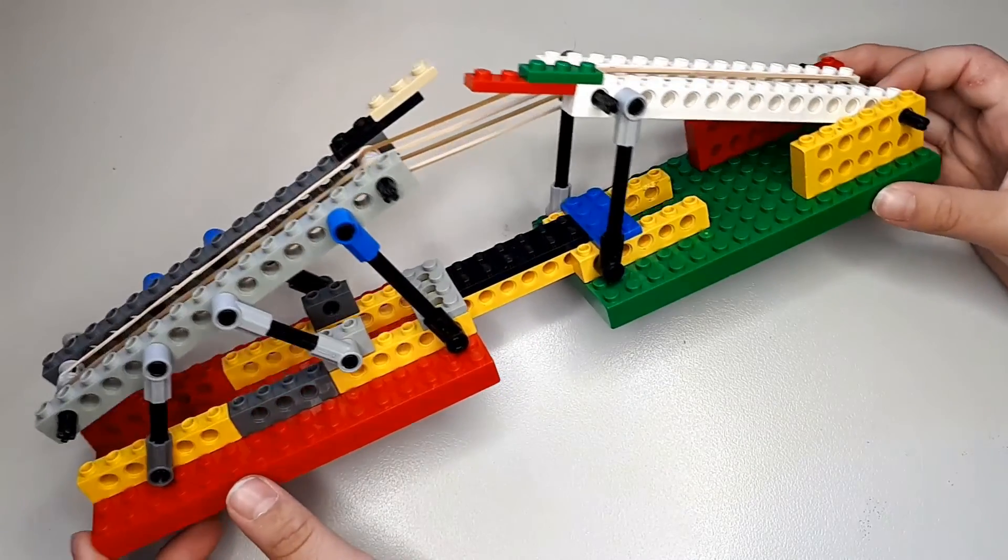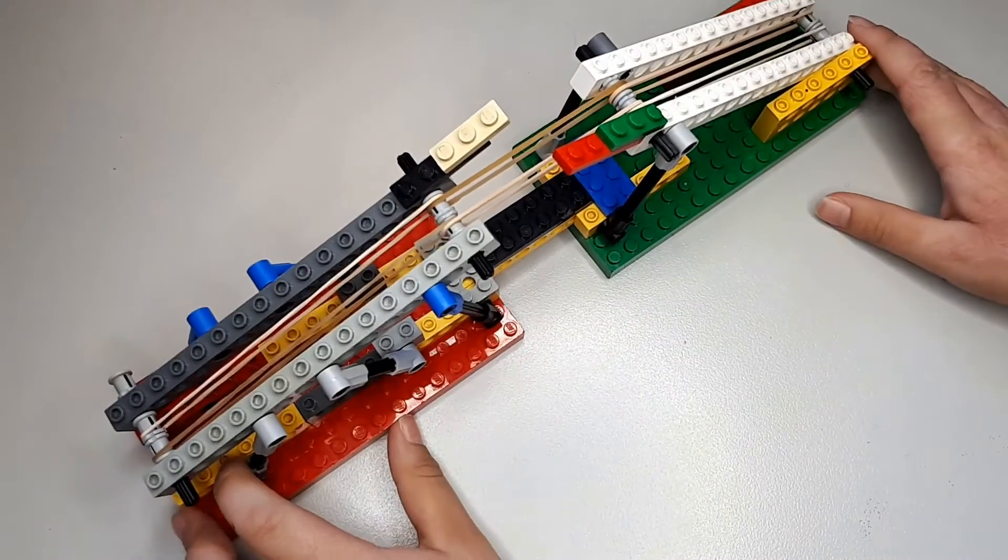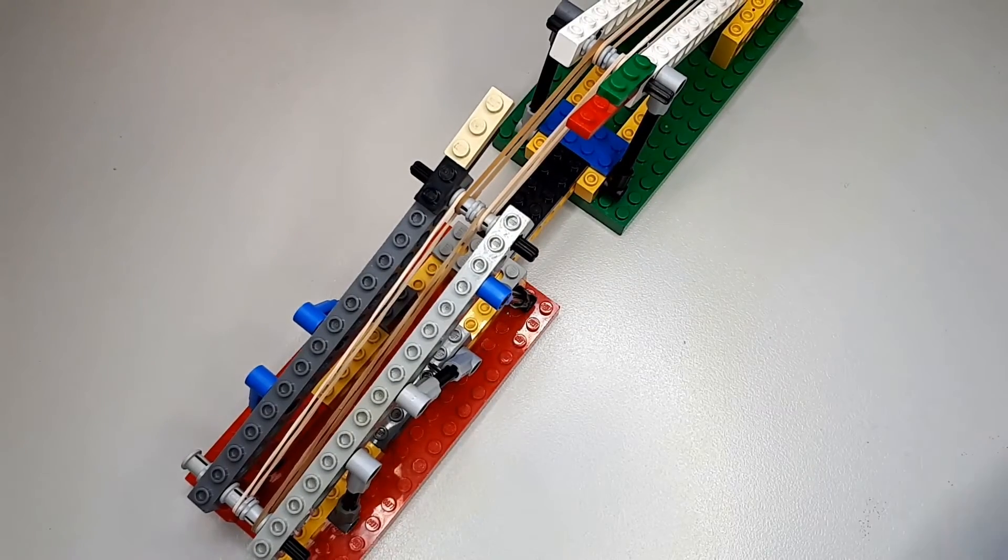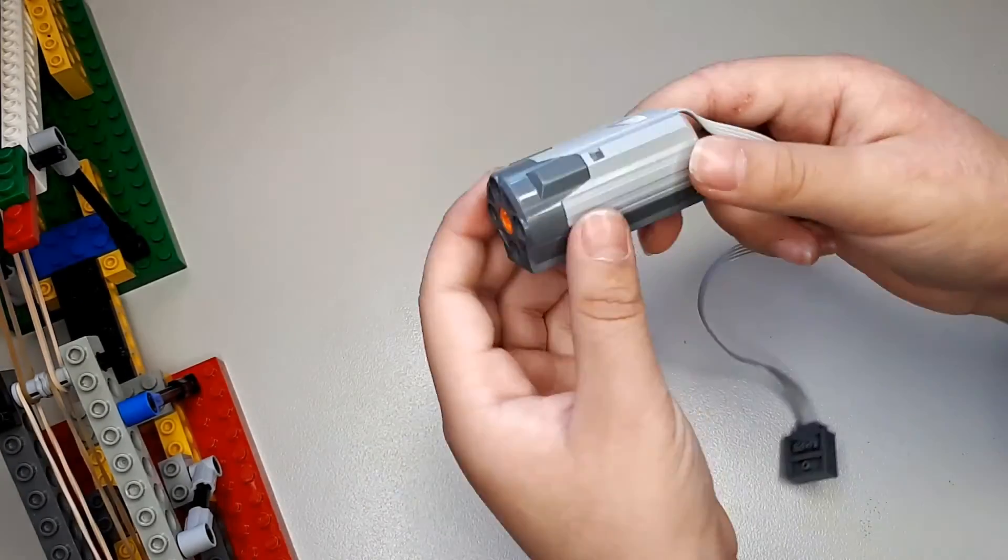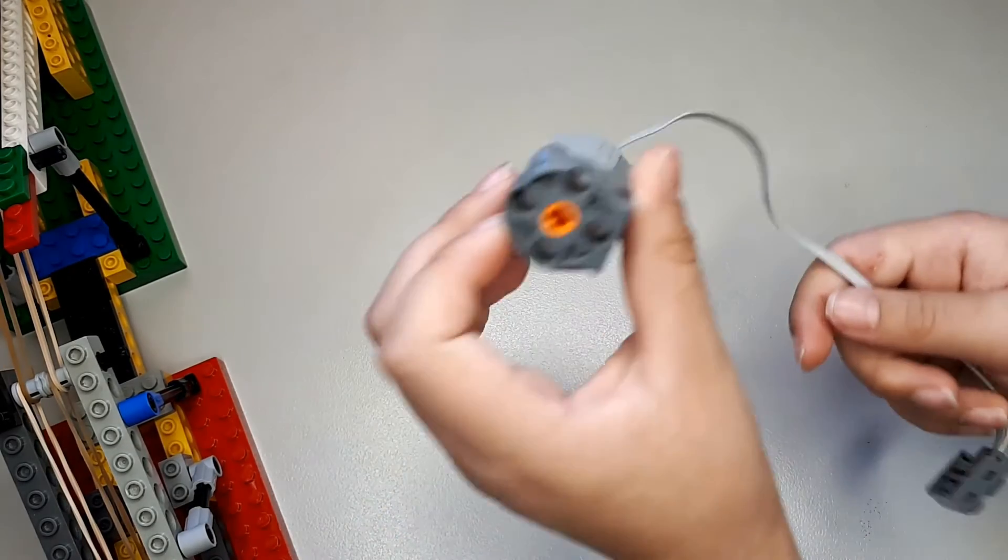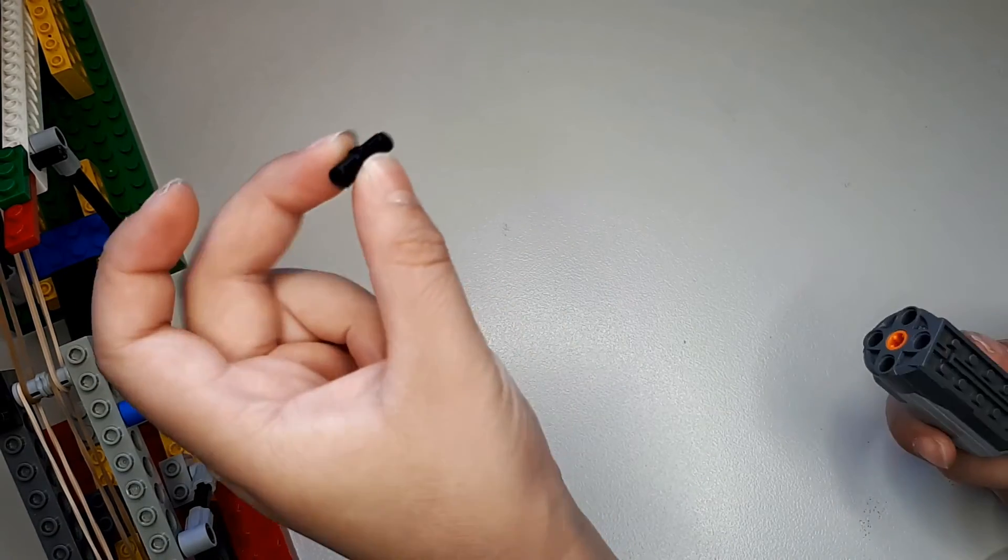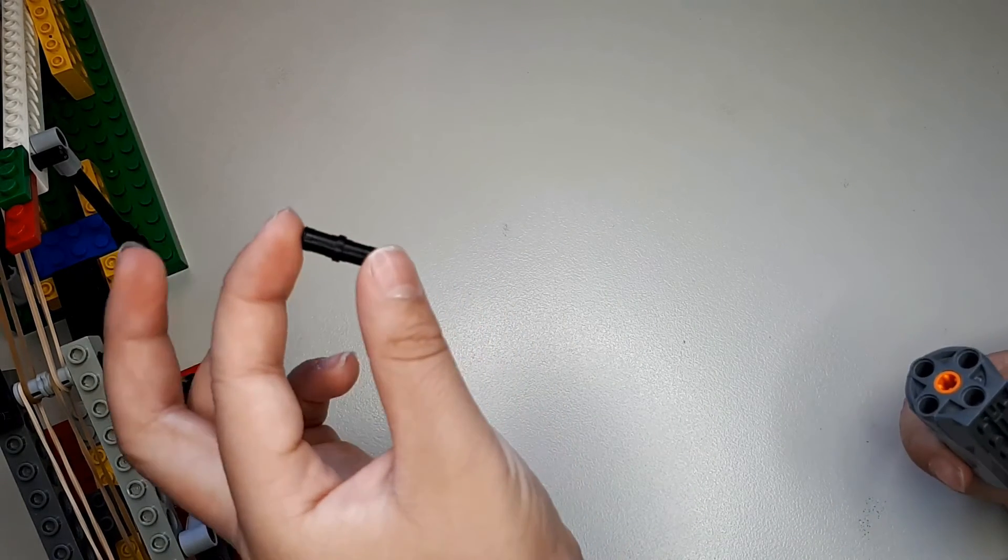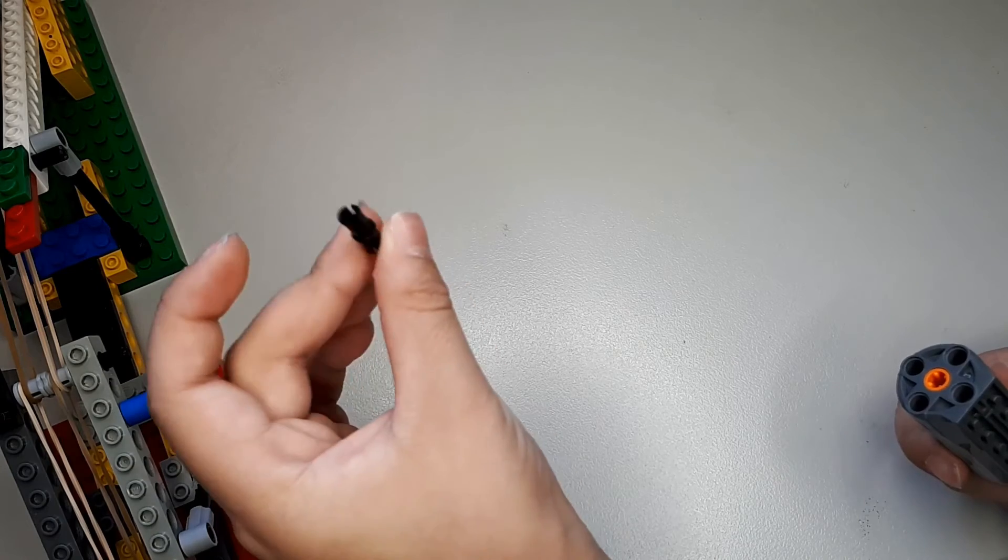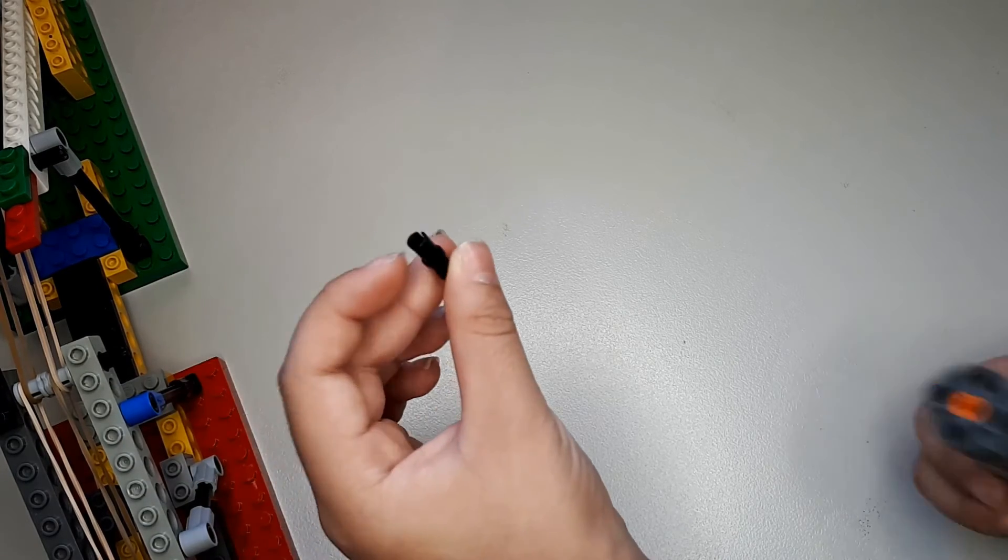All right, can we test this one? Yes. We are going to test this one by using a Lego motor. So we will need a black pin. A black pin is a friction pin, so it won't move around as much.